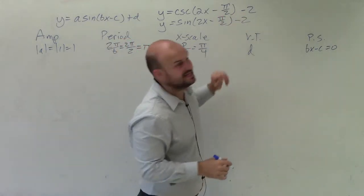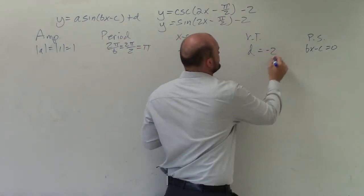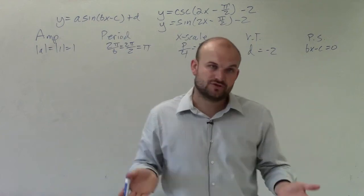Vertical translation, you can see d is equal to negative 2. So since d is equal to negative 2, that means I'm going to shift my graph down two units.